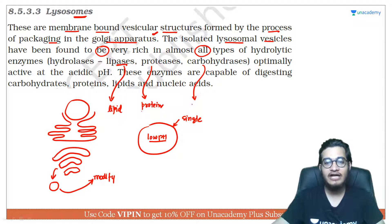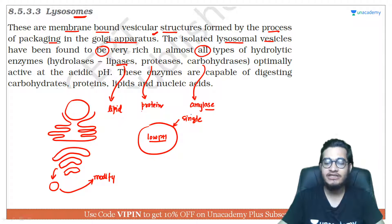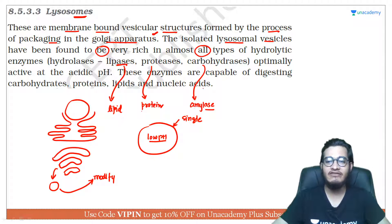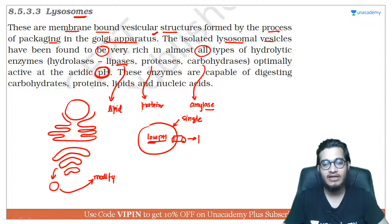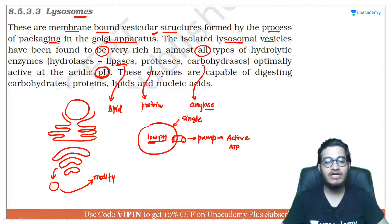Carbohydrases, या फिर आप amylases इसे बोल सकते हो, जो कि आपका carbohydrate को तोड़ेगा। और इसके अलावा आपका nucleases भी यहाँ पर present होते हैं जो कि आपके DNA, RNA पर attack करके उनको cleave कर देते हैं। ये सभी enzymes acidic pH यानि low pH पर activate होते हैं। यह low pH मिलता कैसे है? यहाँ पर आपका proton pump लगा रहता है — pump का मतलब active transport है, यानि यहाँ पर ATP की ज़रूरत पड़ेगी।